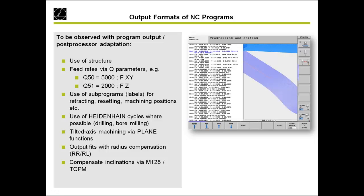When making an NC program output, you should use proper structure — this is very helpful when you have a program with 300,000 sentences, allowing you to jump quickly from one milling job to the next. Also important: use Heidenhain cycles where possible — for drilling or bore milling cycles for example — so that the operator at the machine can make small changes easily, like adjusting the step of a drilling cycle. Use radius compensation, and for inclined machining use M128 or TCPM.